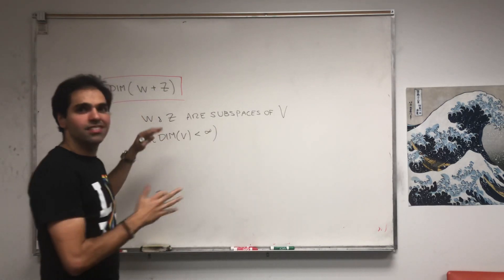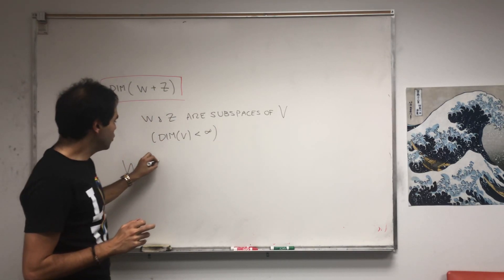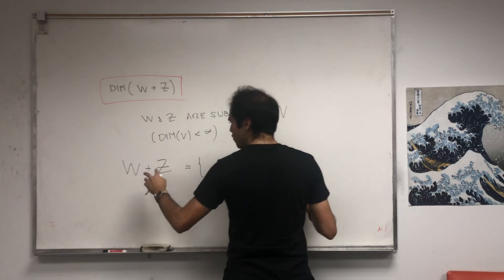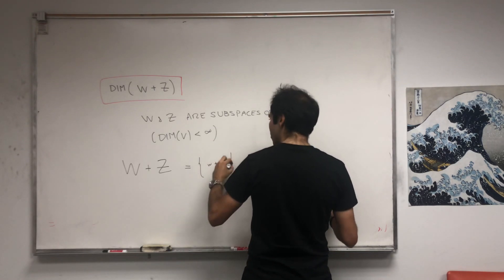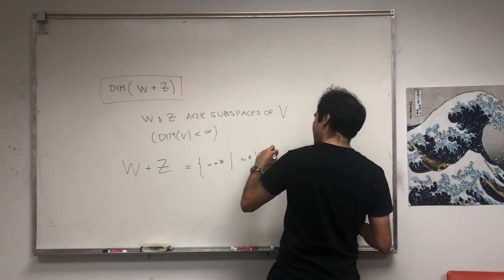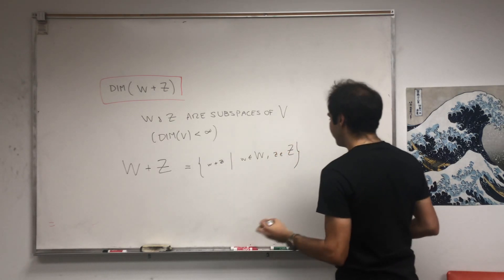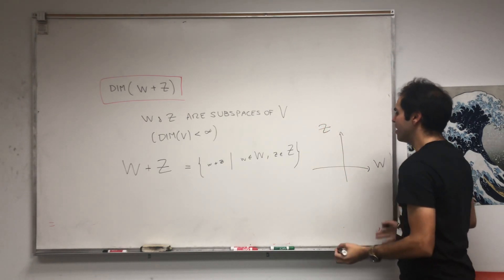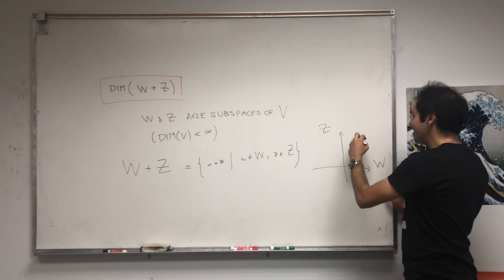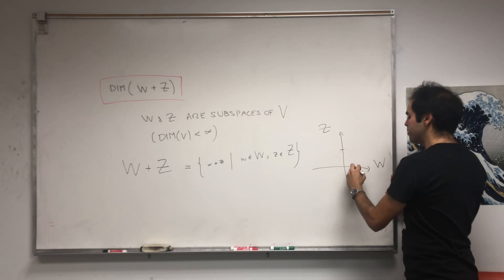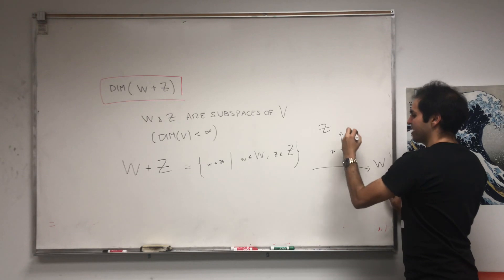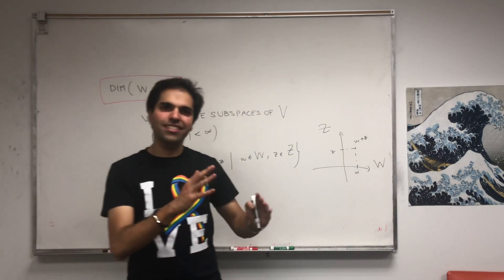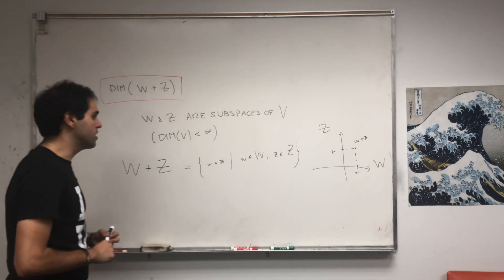What does it mean to take the sum of subspaces? Well, very simple — you just take the sum of each element in the subspace. So it's just the set of sums, little w plus little z, where little w is in W and little z is in Z. For example, if W is the x-axis in R² and Z is the y-axis in R², then the sum is the whole plane, because taking arbitrary sums of vectors gives you any vector in that plane. It's kind of like a linear combination, except we're not multiplying by a scalar — we're simply taking the sum of the two.